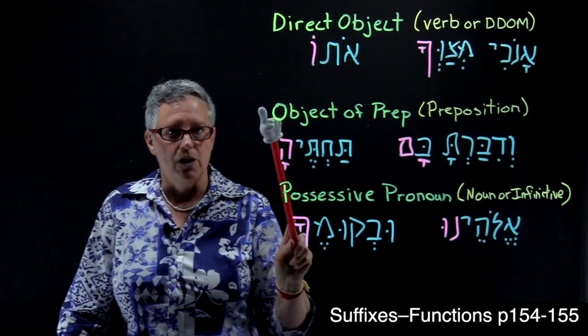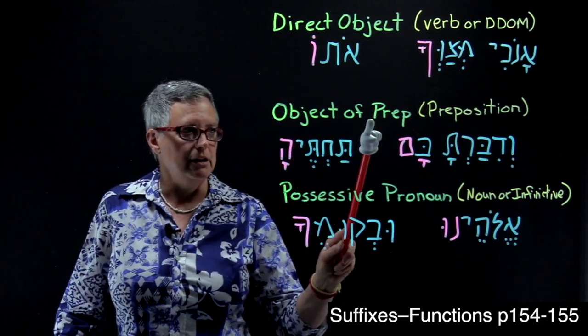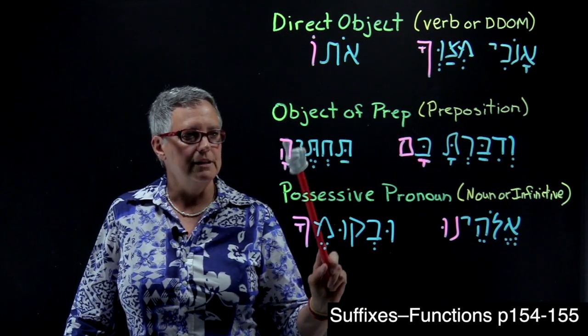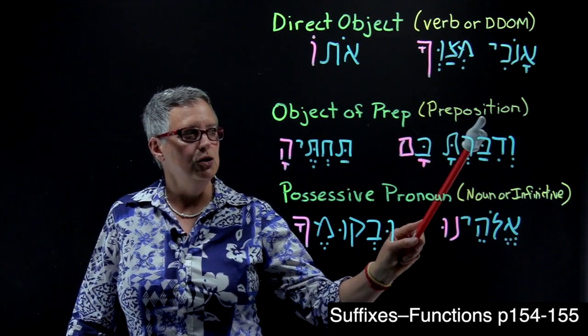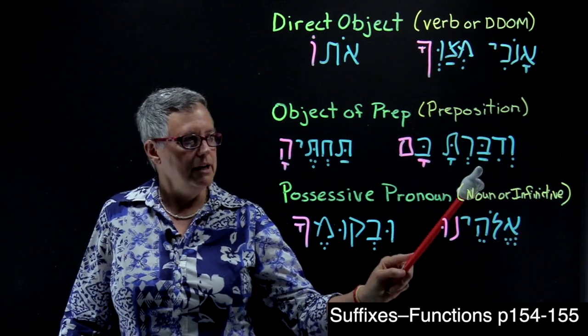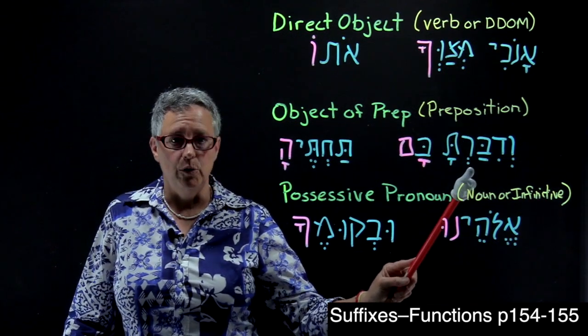The second function, object of a preposition, is the result of the suffix being attached to a preposition. And here we have an example from the Shema again,